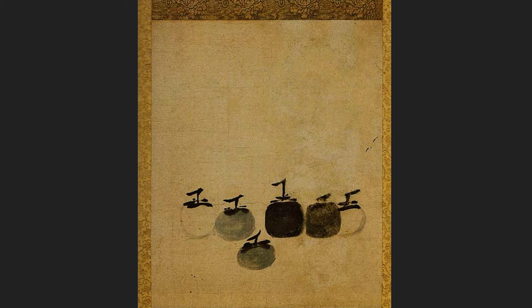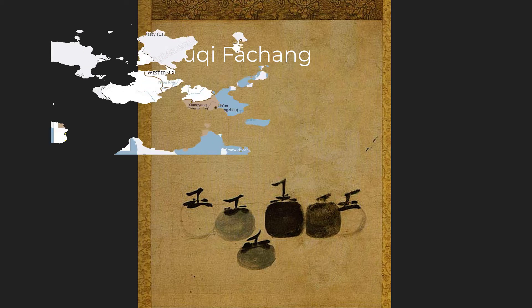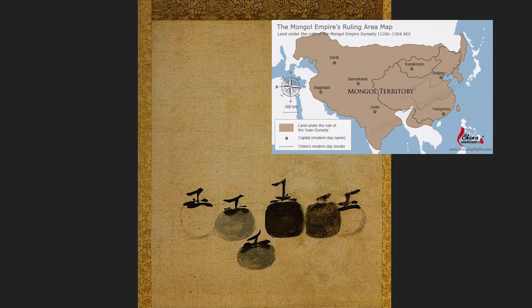Today's topic is the famous 13th century Chan Buddhist painting titled Six Persimmons by the artist Muqi Fa Chong. Muqi lived during the Southern Song Dynasty in China. His death in 1269 came just one decade before the collapse of the Southern Song Dynasty to the invading forces of the fierce and ever-expanding Mongolian Empire.